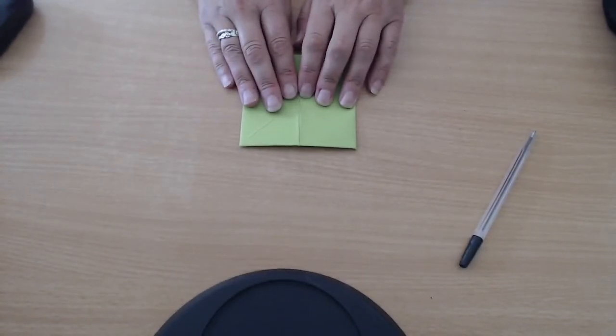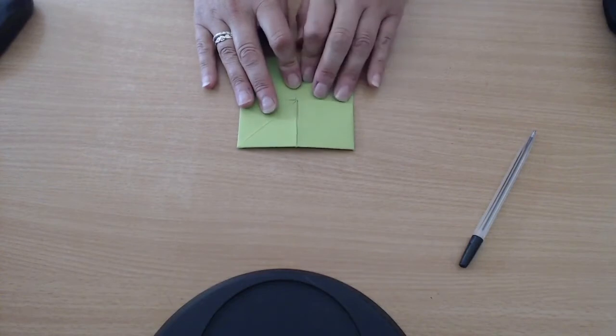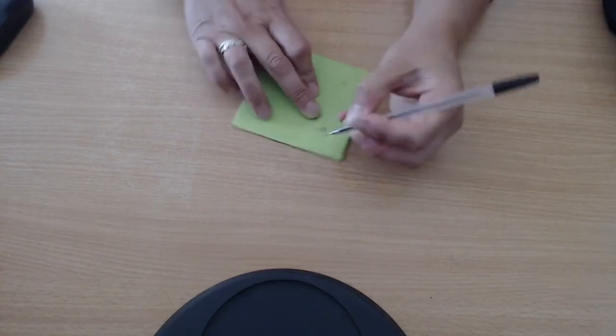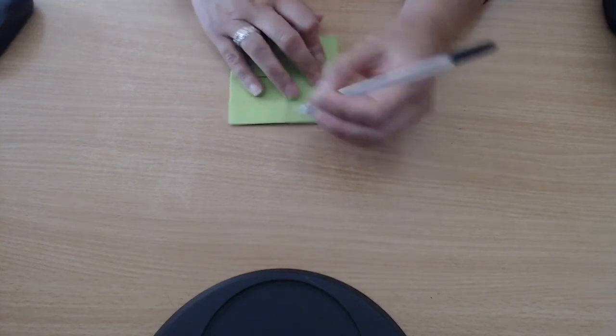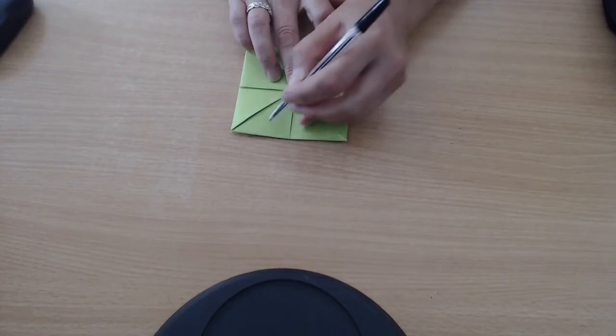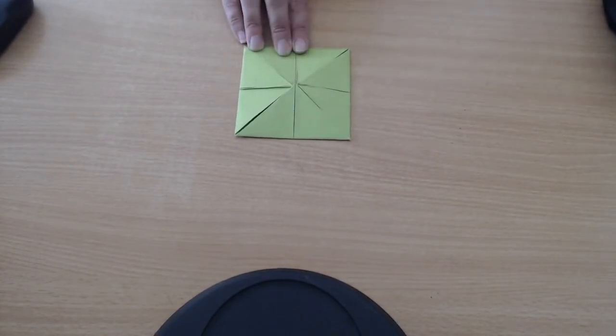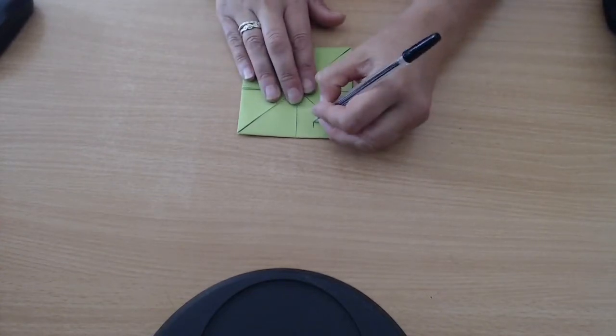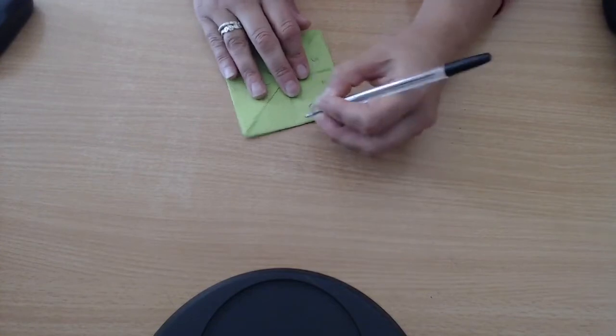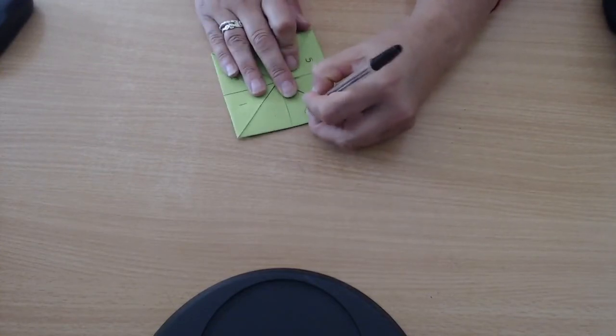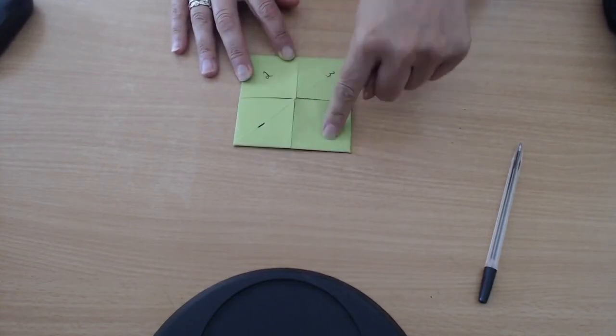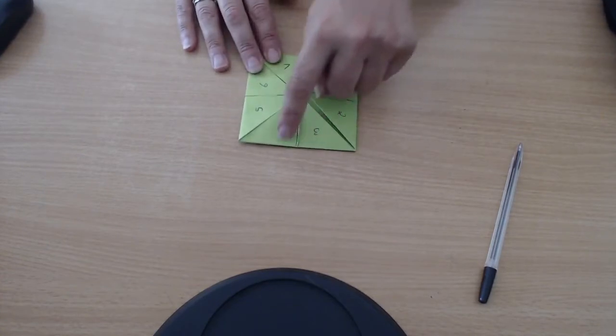And I'm going to fold it the other way so I've got another good crease. I'm pressing so hard my fingers are going red. Now this is going to be really exciting because we're going to turn this into a behavior decision maker. So I'm going to put some numbers on the outside. I'm going to put one, two, three, and four like that.